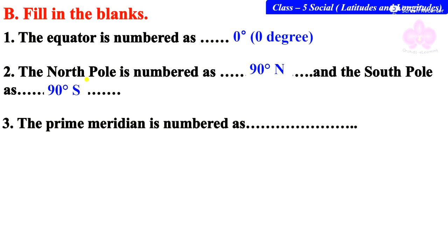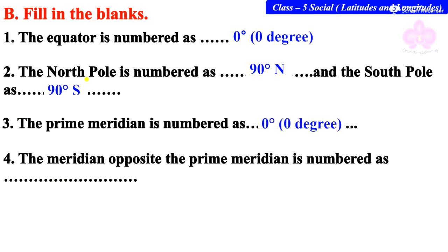Third, the prime meridian is numbered as dash. Fourth, the meridian opposite the prime meridian is numbered as dash.